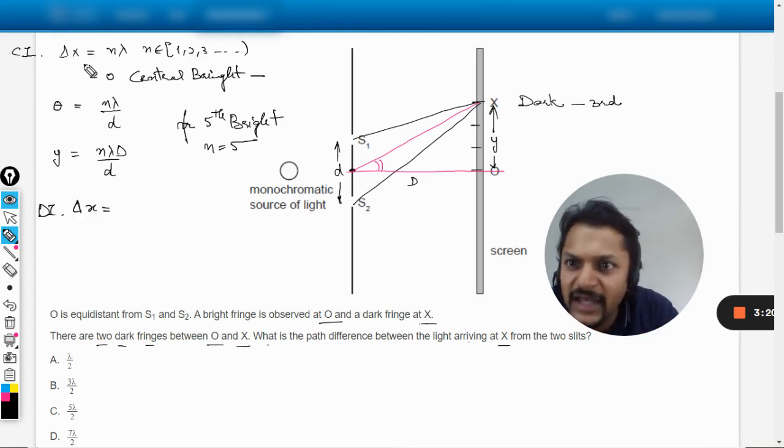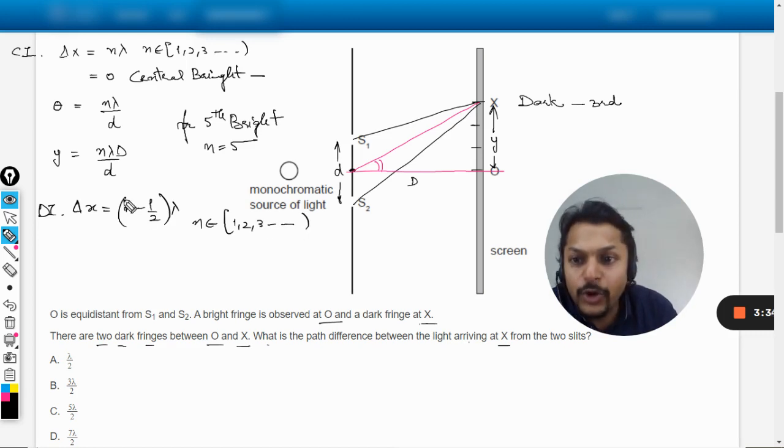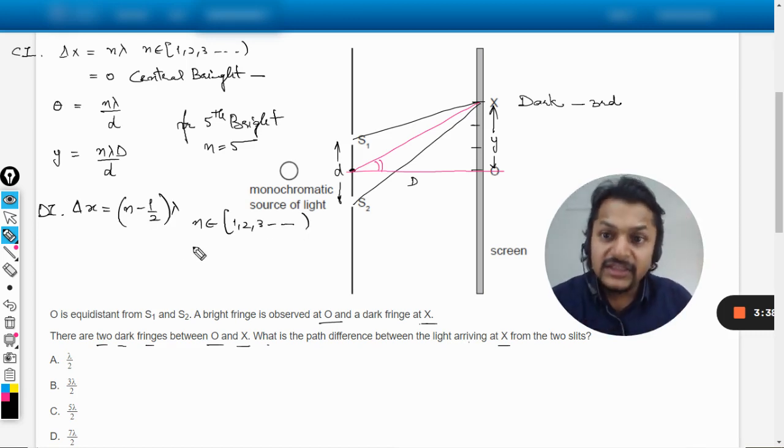Now let us go for destructive interference. Here the delta x comes out to be (n minus half) into lambda. Now there is a catch here. Again, the n is like 1, 2, 3, and it goes like this.